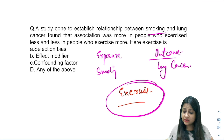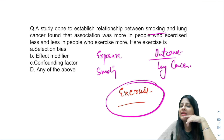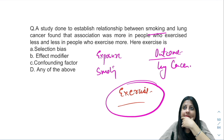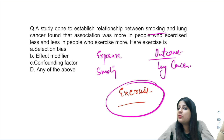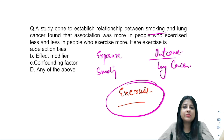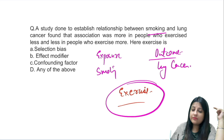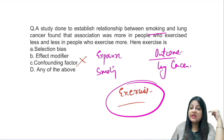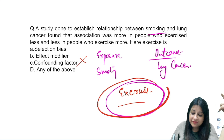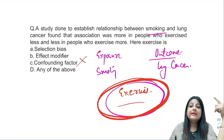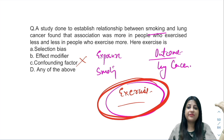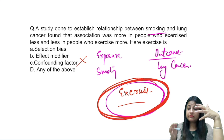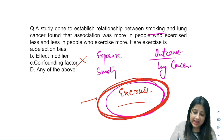But if we look at exercise as the third variable — do those who smoke exercise? And is exercise protective for lung cancer, meaning if you exercise you will not develop lung cancer? No. So exercise does not fulfill the criteria of a confounder. Therefore, this is an effect modifier.